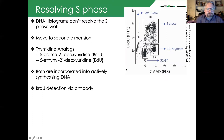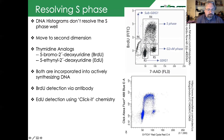Here is an example of BrdU versus 7-AAD. Here is our G0/G1 peak. Our BrdU-positive sample shows our S phase very nicely, and then we get to our G2M peak. If we look at the same results by EdU, we see a similar pattern: G0/G1, S phase, G2M.